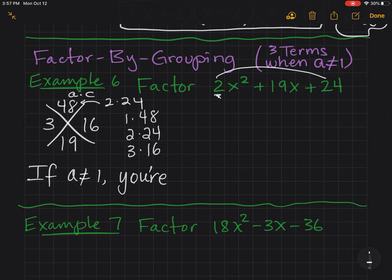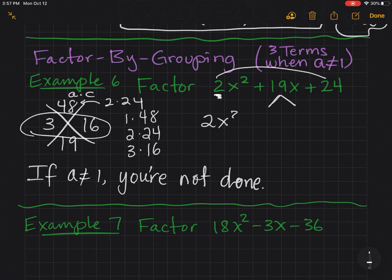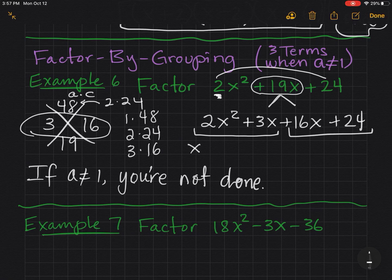You're not done. So at this point, if a is not one, that means what you got in the diamond is only the split. And I'll show you what I mean by that. I'm going to bring the 2x squared down. And instead of writing a positive 19x, I'm going to split it to 3x plus 16x. And you notice that does equal 19x. So I have not changed the value. But now I have four terms that will factor by grouping.